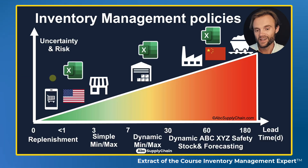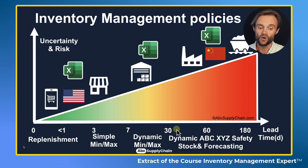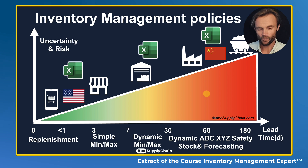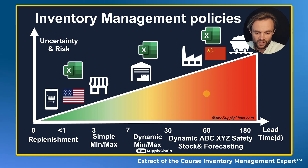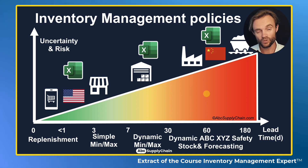At the end, based on uncertainty and lead time, you will use different methods — from simple replenishment and min-max, to dynamic min-max, or dynamic ABC XYZ, safety stock, and forecasting based on the level of uncertainty. This is not about your industry — we use the same principles per industry where we change your lead time, your level of volatility and uncertainty, and level of risk. Based on that, you should use a different method to find the right balance between inventory and service.